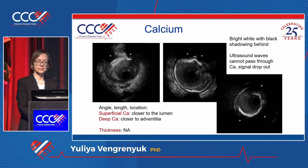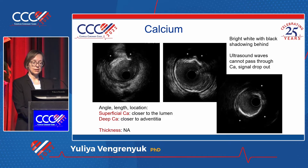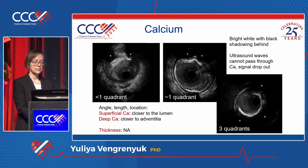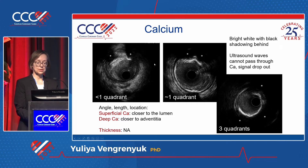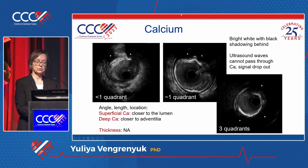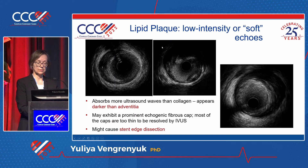Calcification by IVUS has bright white features with dark shadowing behind. By IVUS we can only analyze angle, length, and location. We can classify calcification as superficial or deep — superficial calcification is very close to the lumen and deep calcification is closer to the adventitia. We cannot characterize the thickness of calcium.